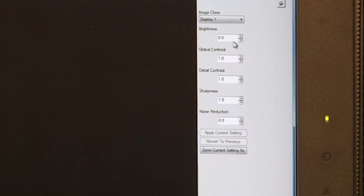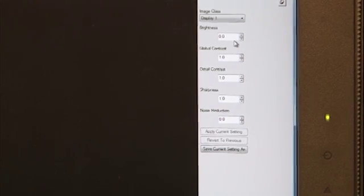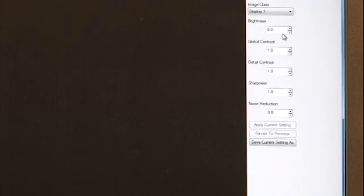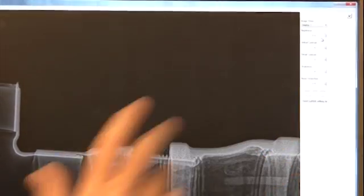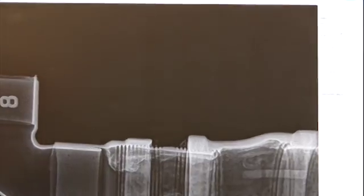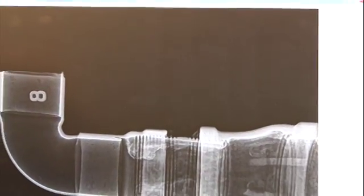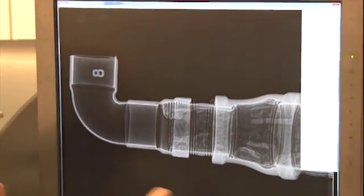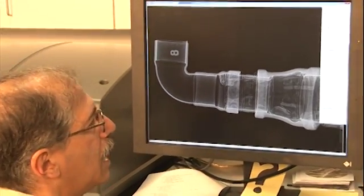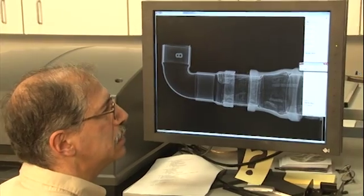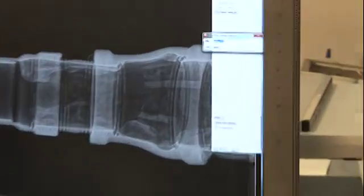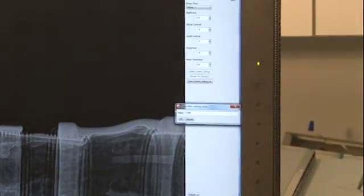So in combination of those eight image classes and those five parameters that we can adjust, we can really optimize and hone in on a real nice optimum setting for a given application. And once we've adjusted that to just the way we want it, if we're going to be shooting that technique or that part or that application over and over again, then I can click this button that says Save Current Setting As, give it a name, and then say OK.